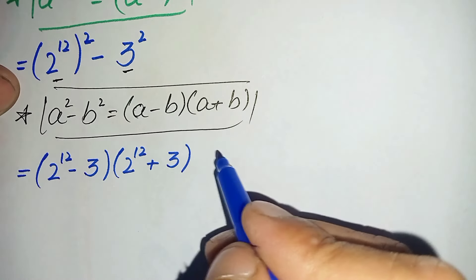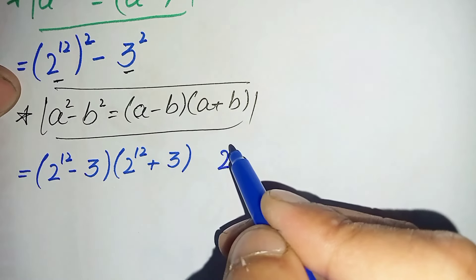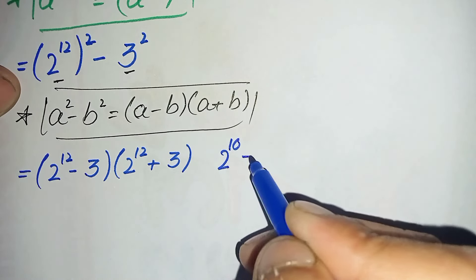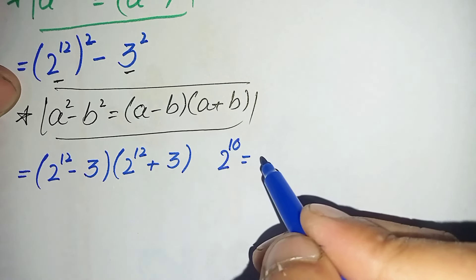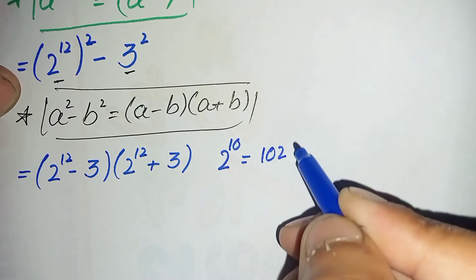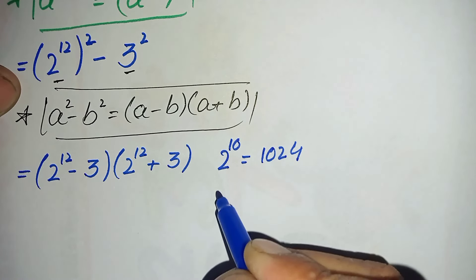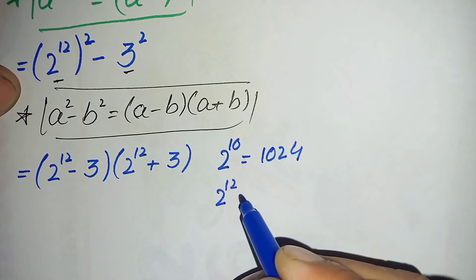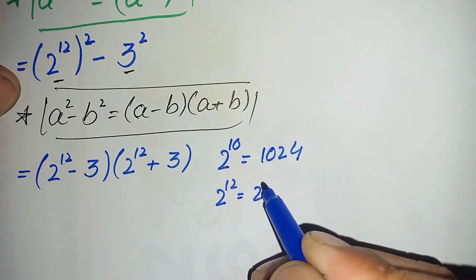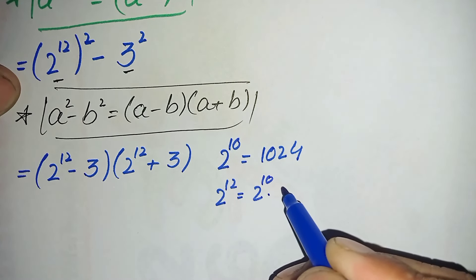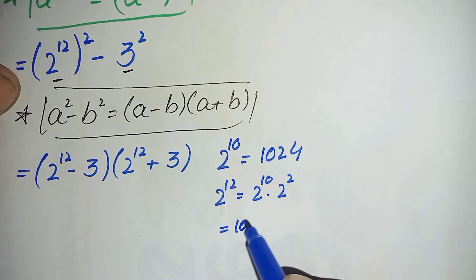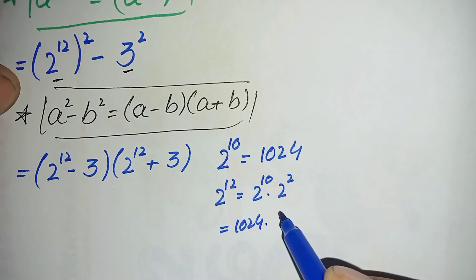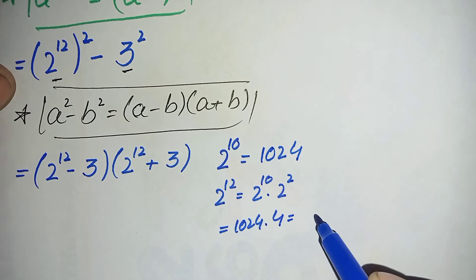Here first we will find the value of 2 raised to power 12. We know that 2 raised to power 10, which is a very famous number used most of the time, is equal to 1024. Now 2 raised to power 12 is the same as 2 raised to power 10 times 2 raised to power 2. So that is 1024 times 4.